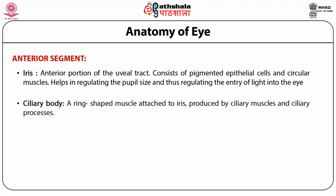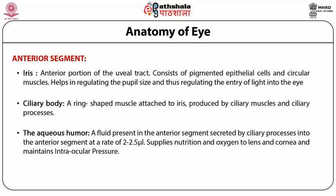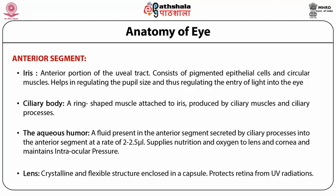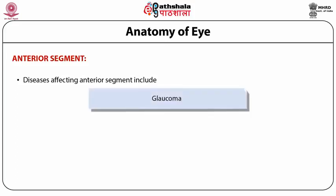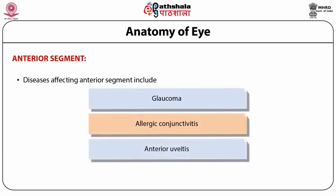The ciliary body is a ring-shaped muscle attached to the iris, produced by ciliary muscles and ciliary processes. The aqueous humor is a fluid present in the anterior segment, secreted by ciliary processes at a rate of 2 to 2.5 microlitres. It supplies nutrition and oxygen to the lens and cornea and maintains intraocular pressure. The lens is a crystalline and flexible structure enclosed in a capsule, serving to protect the retina from UV radiation. Anterior segment diseases include glaucoma, allergic conjunctivitis, anterior uveitis, and cataract.